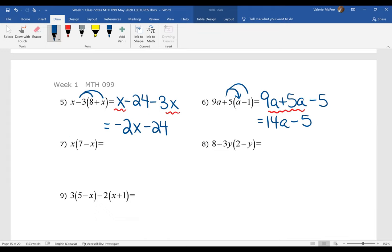Question seven. Now notice I'm not writing X seven. We always put the numerical coefficient in front. X times seven is seven X. What about X times negative X? We know it's going to be negative. Negative X squared. Good.